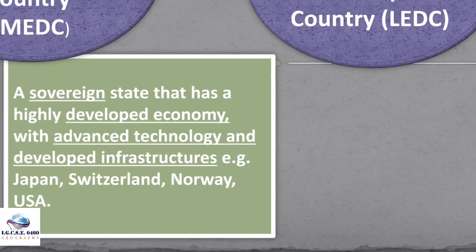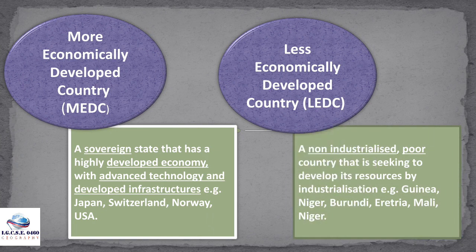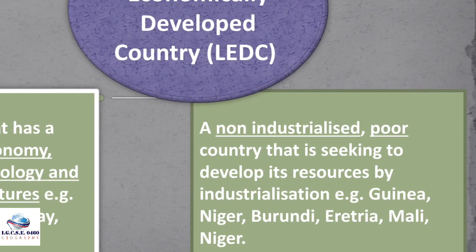On the other hand, an LEDC can be described as a non-industrialized, poor country that is seeking to develop its resources by industrialization. Examples include Guinea, Nigeria, Burundi, and Eritrea, among others. If you're asked to give characteristics, look at some of the key items in the description and you can use them as characteristics.